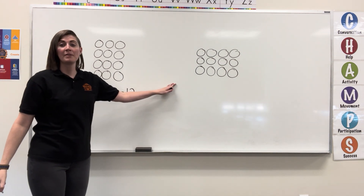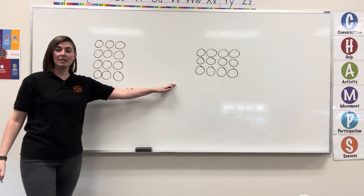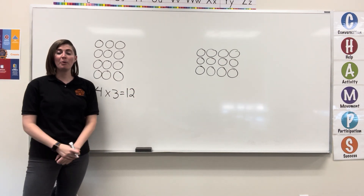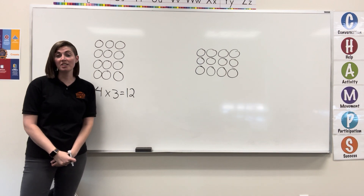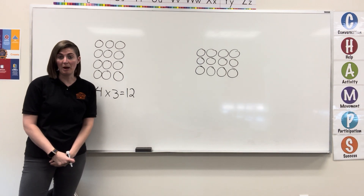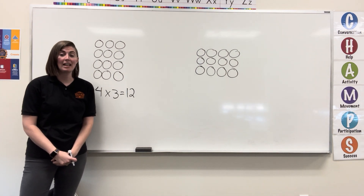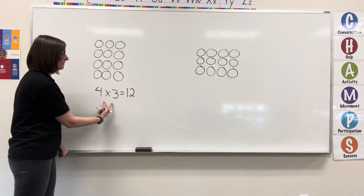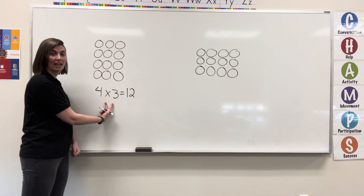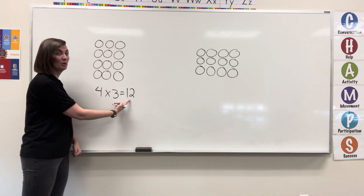Now, there is something called the commutative property of multiplication, which is just like the commutative property of addition. That means you can switch the factors and end up with the same product.